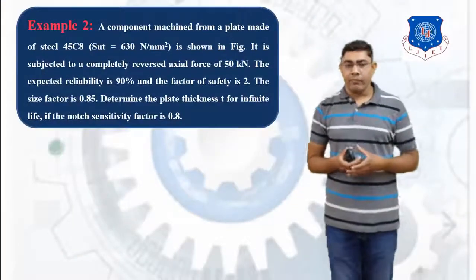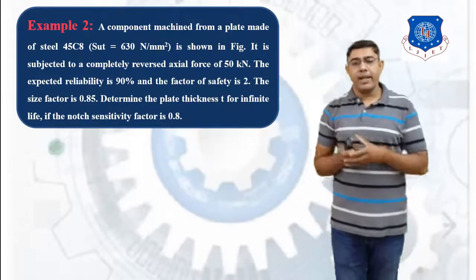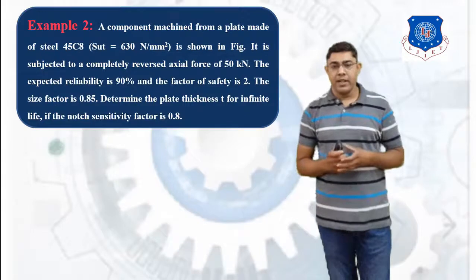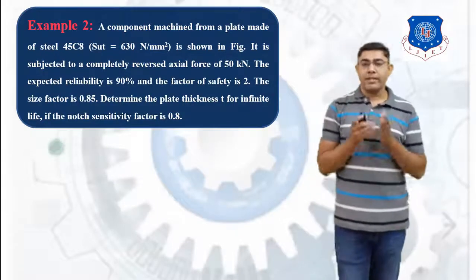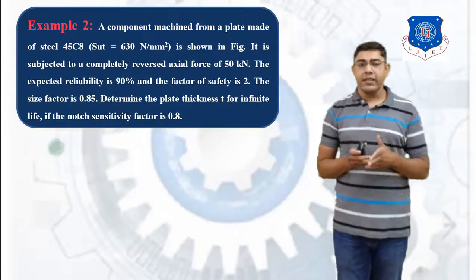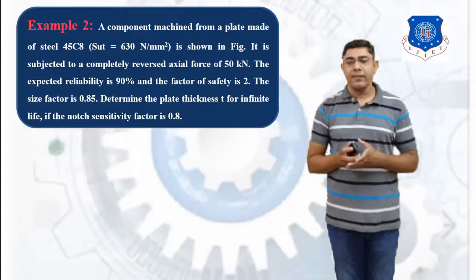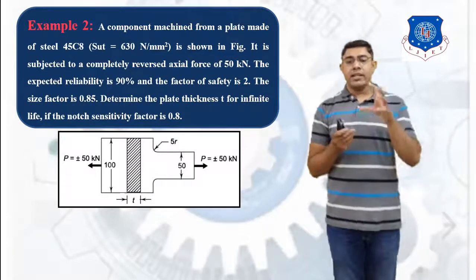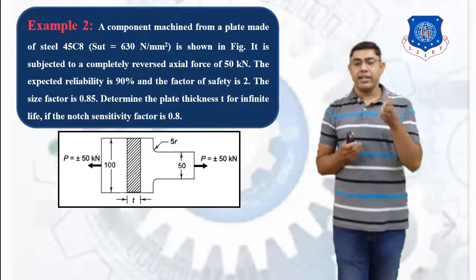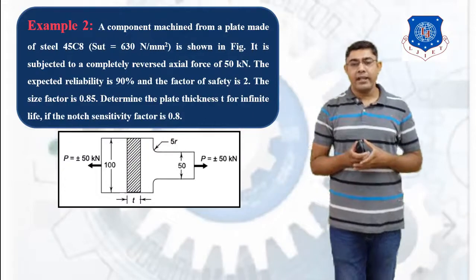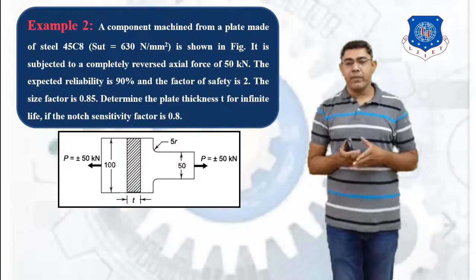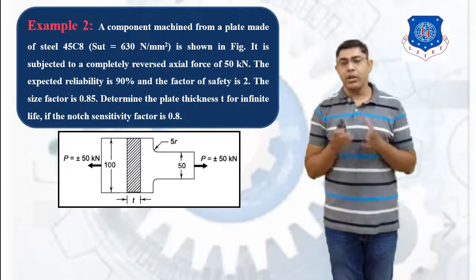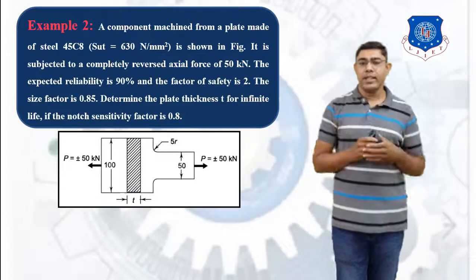Consider the second example: a component machined from a plate made of steel 45C8, where SUT is equal to 630 N/mm², as shown in the figure. The component is a stepped plate with fillets where the cross-section changes. A fillet of 5R is applied. The larger width of the plate is 100 mm and the smaller width is 50 mm. The load applied at the end is a completely reversed axial force of 50 kN.